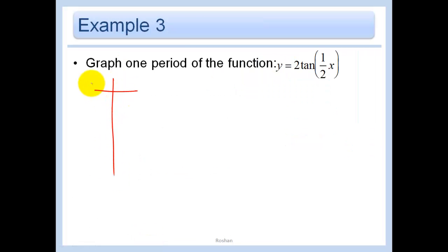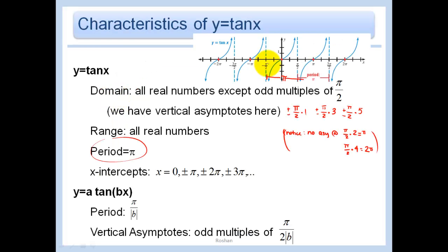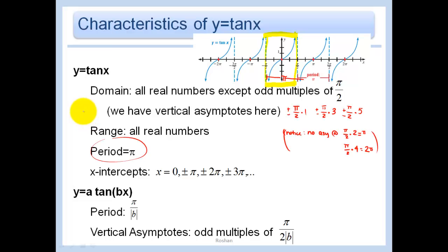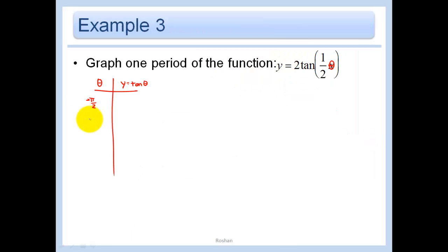Let's start with just our basic theta and then y equals tan theta. And I'm just going to change this to a theta because that's what I was doing yesterday. It doesn't matter if we call it an x or a theta. It just doesn't matter. So the points that we want to use for our tangent graph normally are just simply what happens here. This is typically the period that we want to talk about, which is negative pi over 2 to pi over 2. So I'll go negative pi over 2.